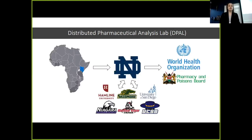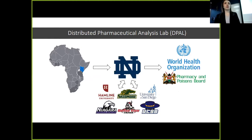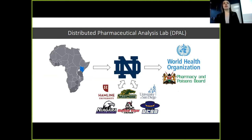The Distributed Pharmaceutical Analysis Lab was created to address these problems. Secret shoppers in developing countries such as Kenya sample pharmaceuticals and send them to the University of Notre Dame, which acts as a clearinghouse and sends them to different institutions around the country to conduct pharmaceutical analysis. Samples found to be substandard are sent back to Notre Dame for further testing, and if continually substandard, they're reported to agencies such as the World Health Organization or the Kenya Pharmacy and Poisons Board.